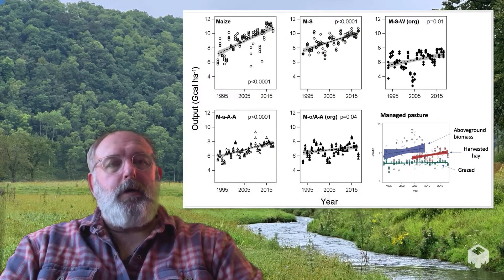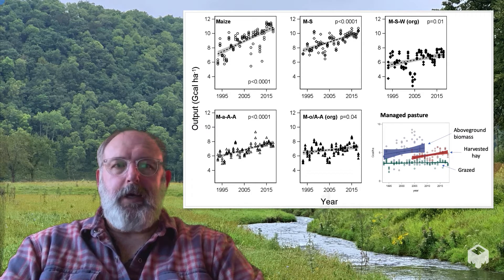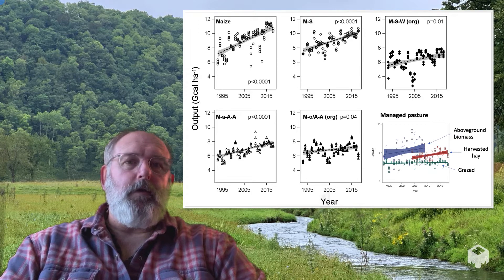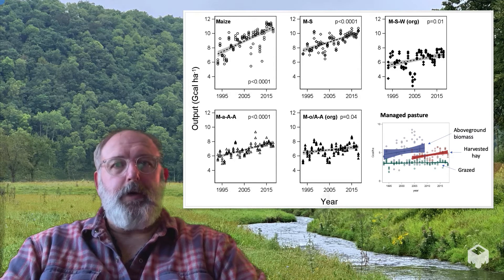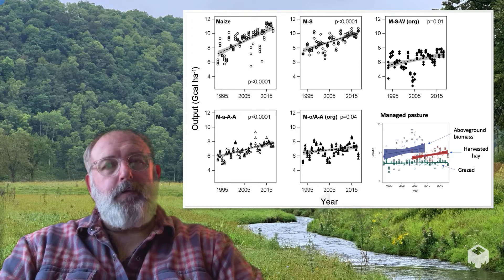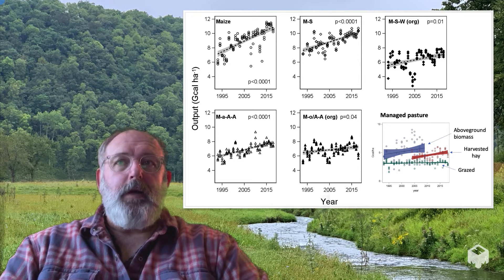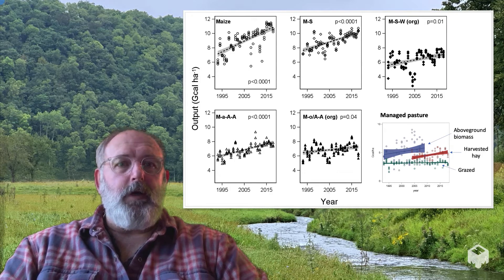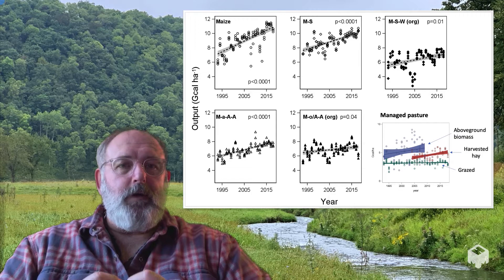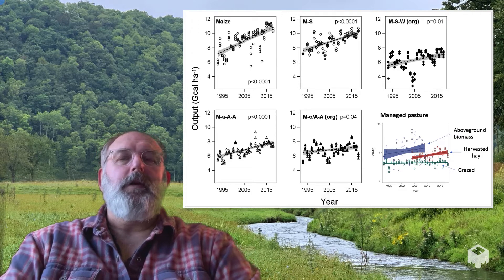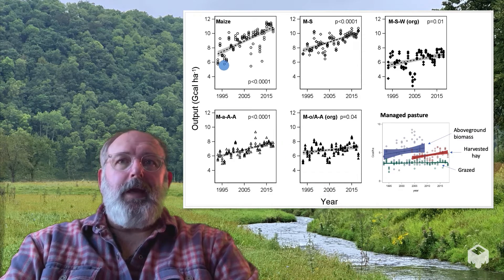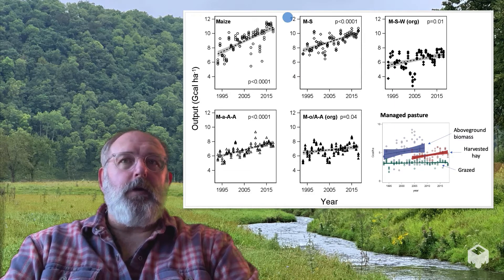I want to talk briefly about results from the Wisconsin Integrated Cropping Systems Trial, WICST, which we've discussed before. Here I'm showing the yields of six agricultural systems at WICST over a 30-year period — a nice long-term data set. All six systems have been standardized so the y-axis is the same for all, representing the amount of energy coming off each system, whether it's corn grain, biomass in alfalfa, or grass consumed by a cow. We've used conversion factors to put yields on an apples-to-apples basis. Clearly, the annual-based systems — maize and maize-soybean — are the highest yielding and also have the highest rate of increase in yields over time.